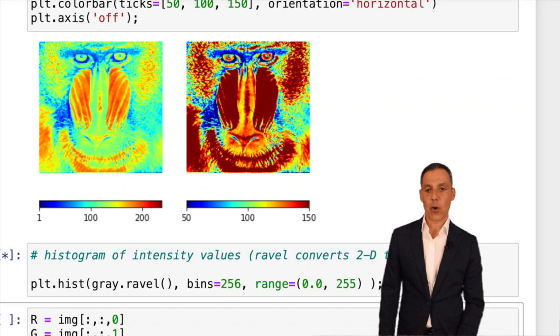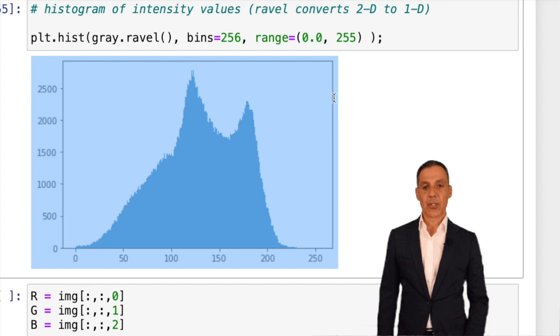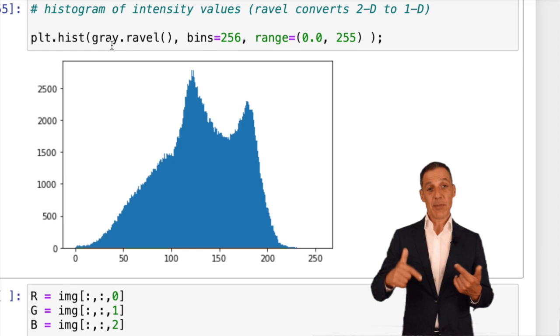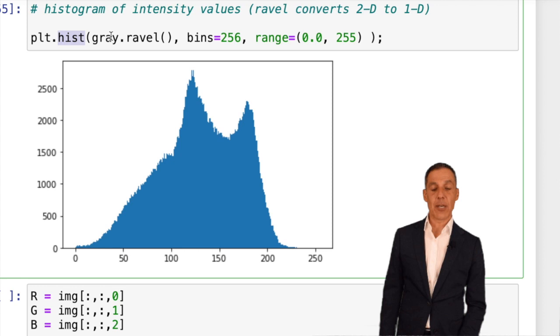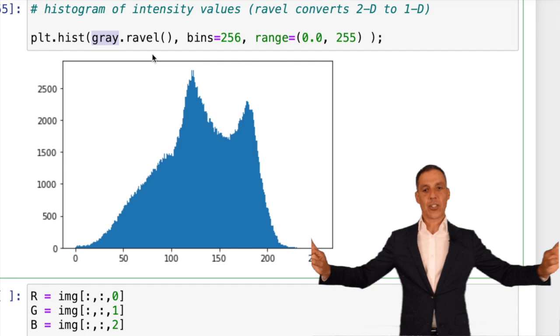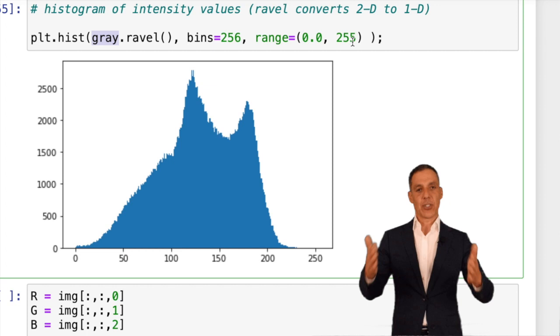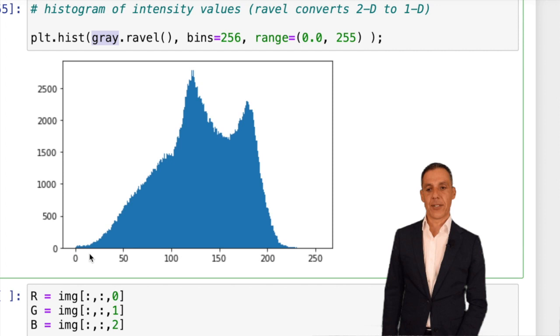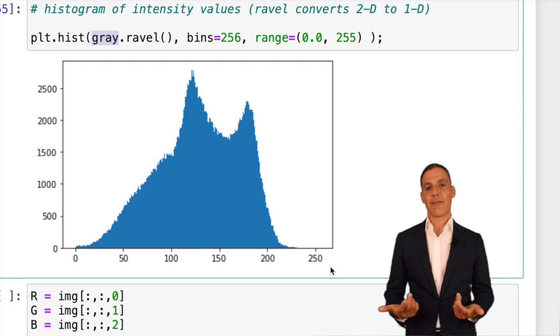A couple more things you'll need to know about in matplotlib with images is I can build histograms of images. Images are two-dimensional, so what you have to do is take the image, this is a gray image, a two by two matrix of values, and call the ravel command, which unravels the image into a one-dimensional list. Now I can compute a histogram with 256 bins in the range of 0 to 255, which is the intensity range. You can see there's very few values in the low end, very few values in the high end.